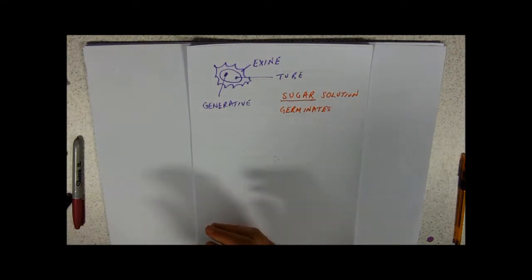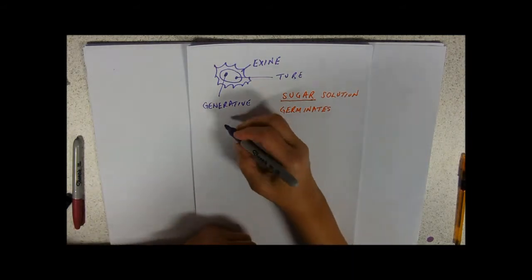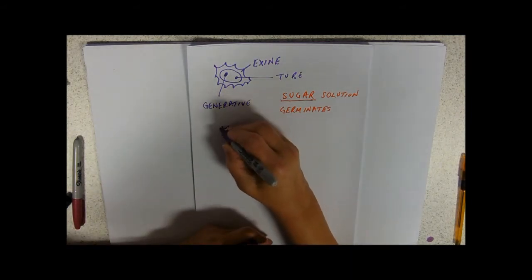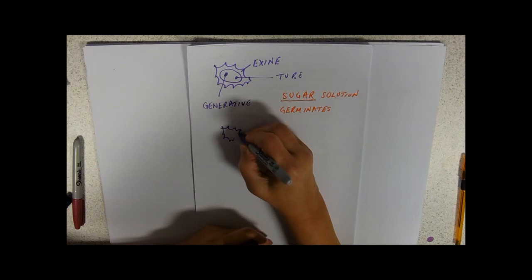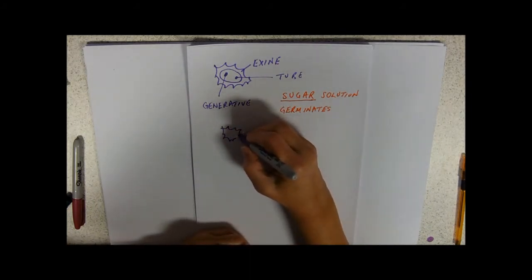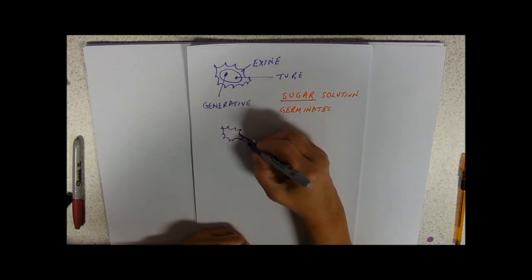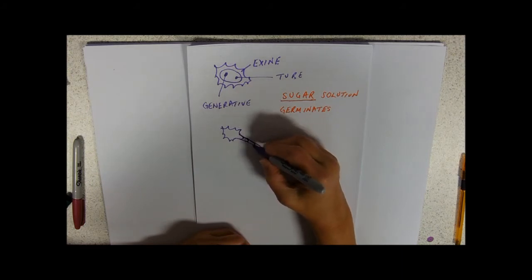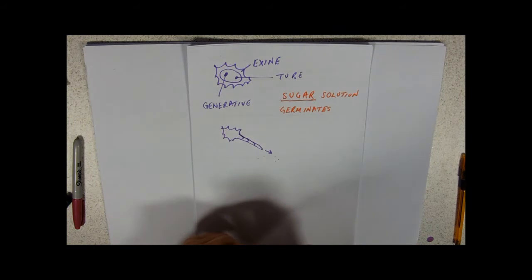What that actually means is that it kind of bursts out of its exine and makes a pollen tube. So the pollen tube is going to grow successively longer and longer all the way making its way down towards the ovule.